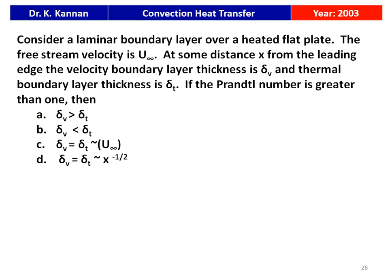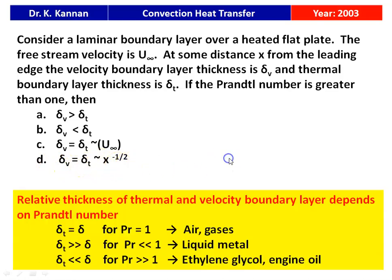Next question from the 2003 paper: consider laminar boundary layer over a heated flat plate. At some distance x from the leading edge, the velocity boundary layer thickness is delta_v and thermal boundary layer thickness is delta_T. If the Prandtl number is greater than 1, then — delta_v greater than delta_T, delta_v less than delta_T, delta_v equals delta_T as a function of U∞, or delta_v equals delta_T as a function of x^(−1/2)? For Prandtl number greater than 1, the thermal boundary layer thickness is less than the velocity boundary layer thickness. Option A is correct: delta_v is greater than delta_T.